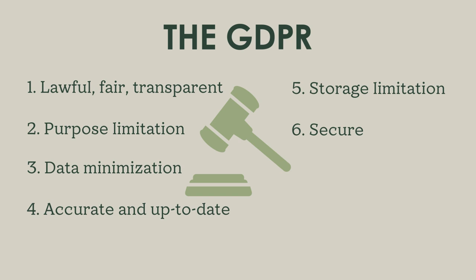Principle six: the data must be processed in a way that's reasonably secure — for instance, to avoid the sorts of major breaches we talked about in the previous video, but also to ensure there's no accidental loss, destruction, or damage of the data. This covers using appropriate technical or organizational measures, such as different cybersecurity solutions like encryption. This becomes particularly relevant at the level of organizations in relation to international standards such as ISO 27701, which I'll be discussing soon.